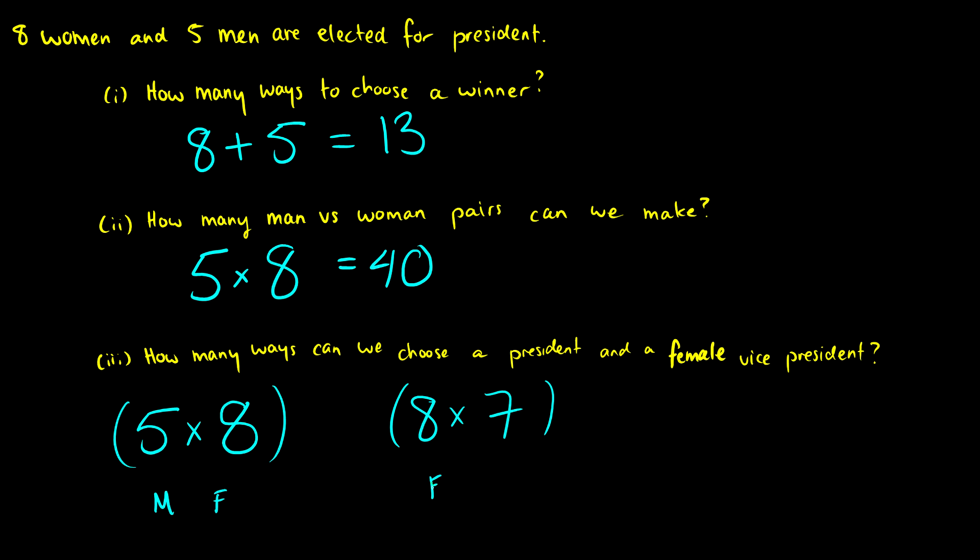So this is the F and F combo, and we're saying look, it can be male and female, or female and female, so we use the rule of sum to add these two conditions together. So our end result is going to be 40 plus 56, which is 96 possible pairs.